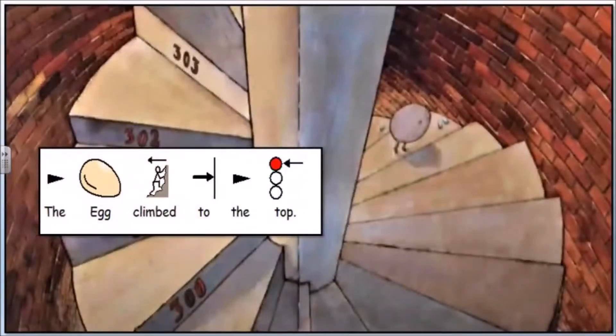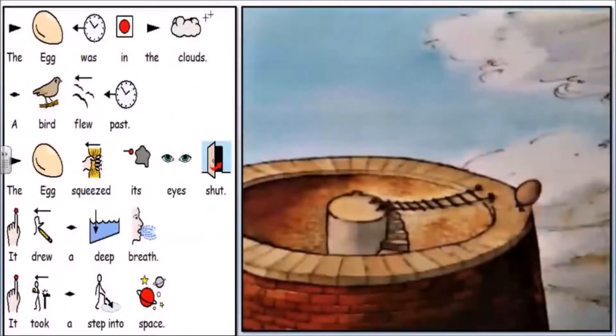The egg climbed to the top. The egg was in the clouds. A bird flew past. The egg squeezed its eyes shut. It drew a deep breath. It took a step into space.